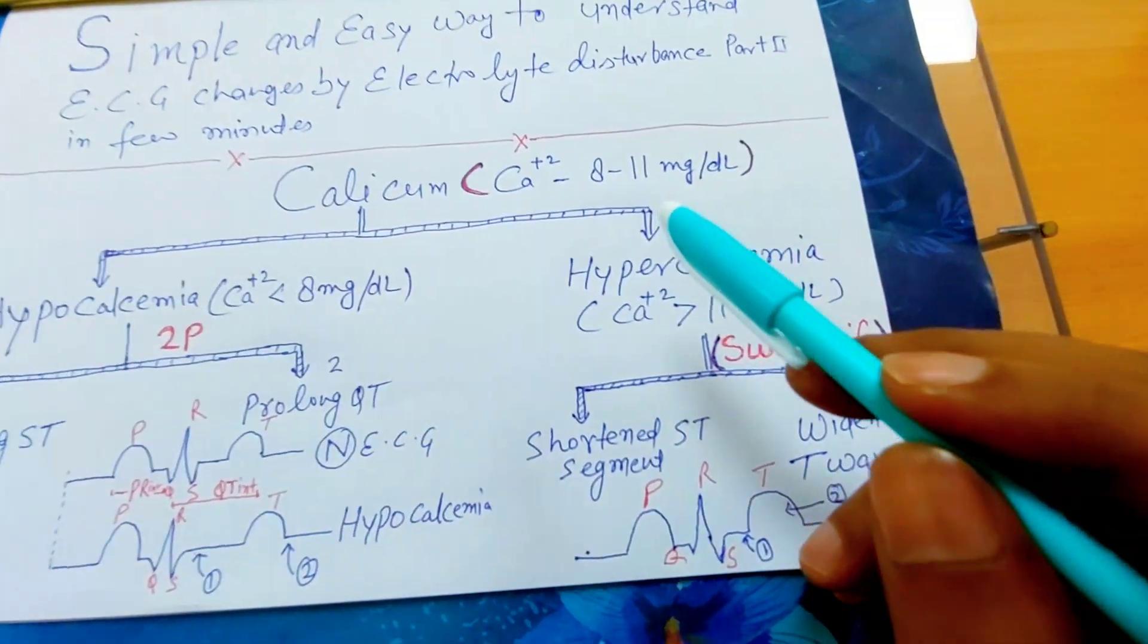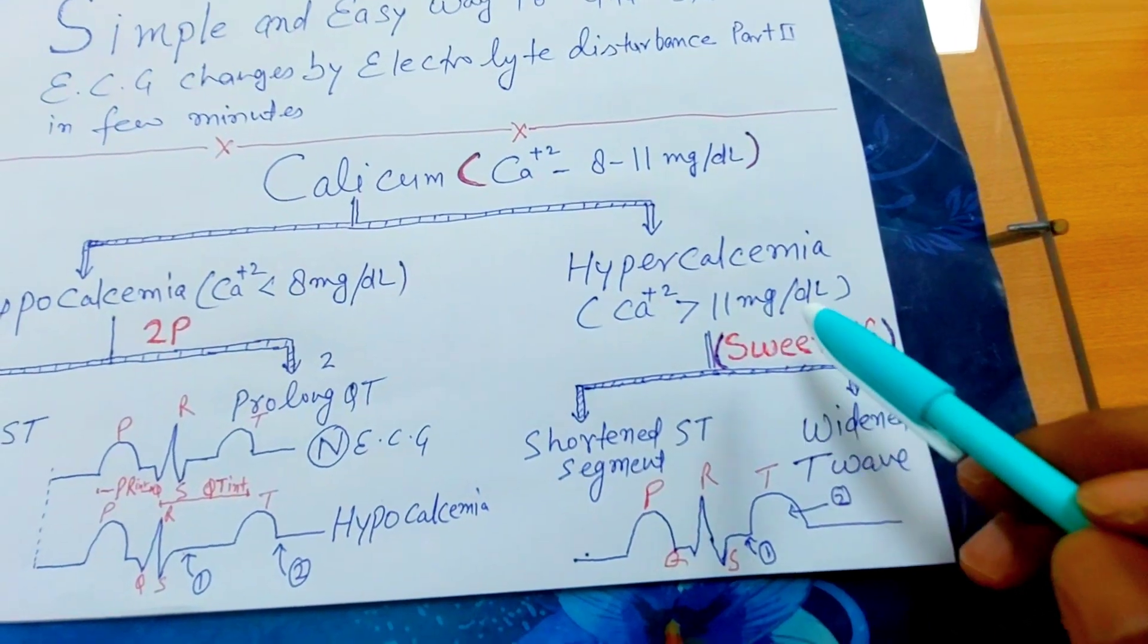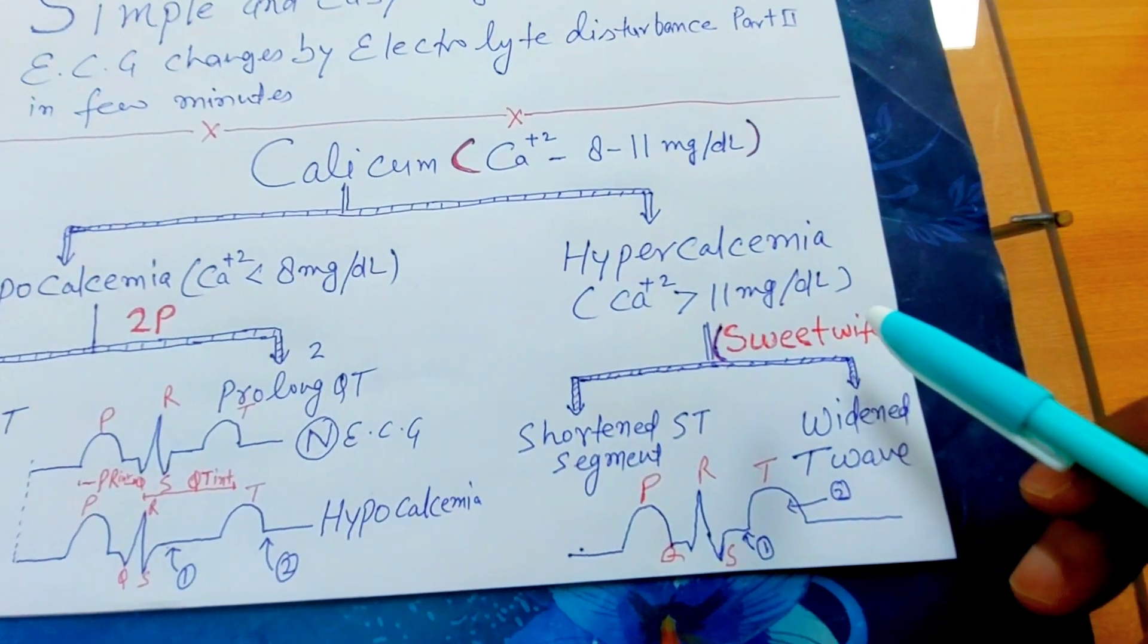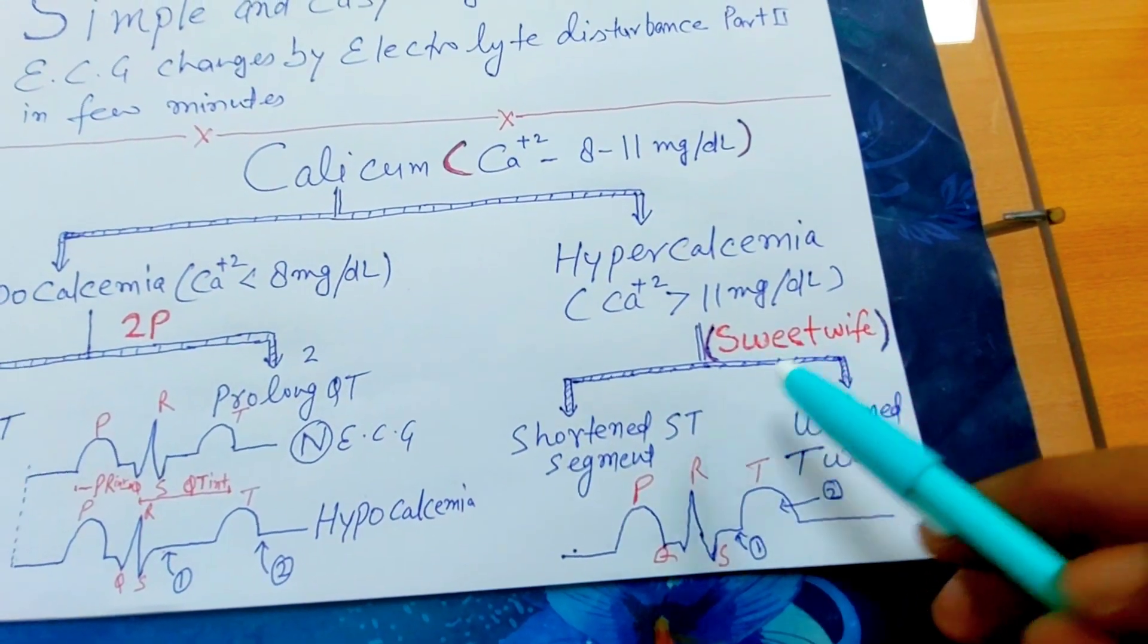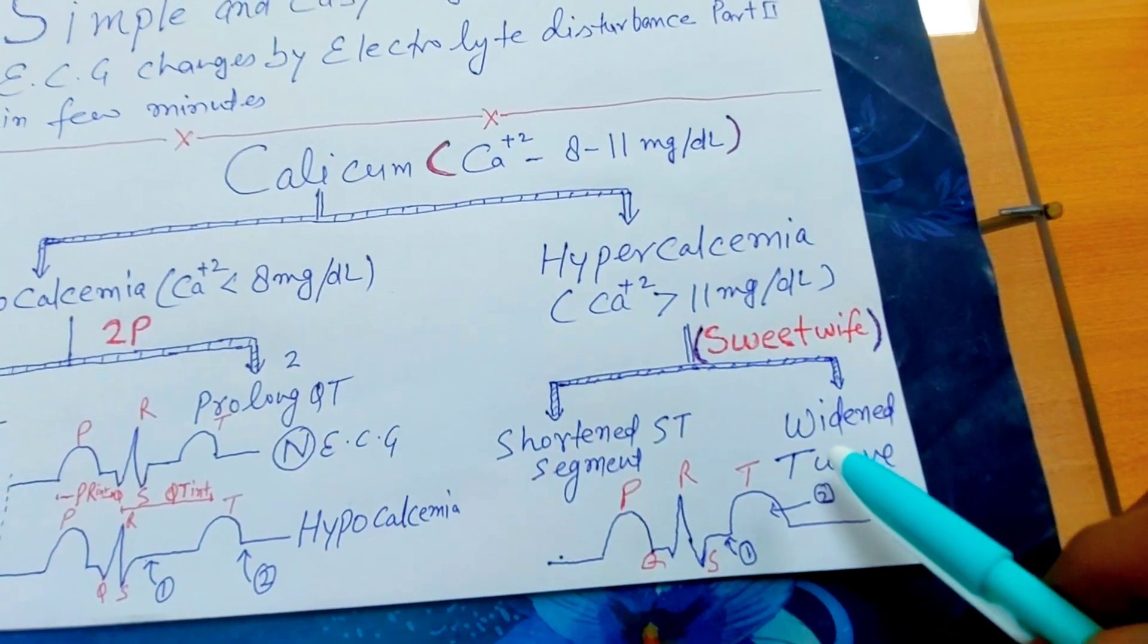Now second, when hypercalcemia, when calcium level is more than 11 mg per deciliter, how do you remember this condition in ECG by sweet vibe? First is shortened ST segment, and second is widened T wave.